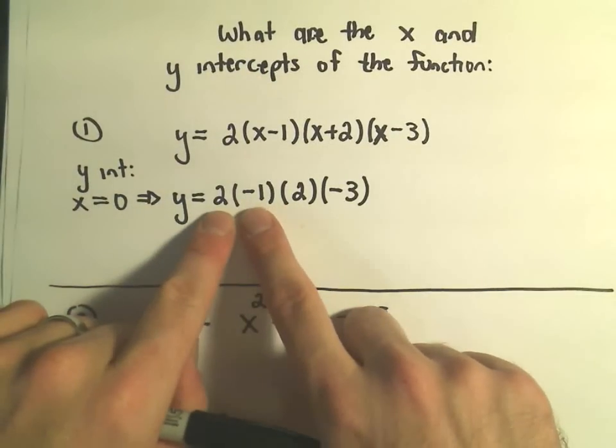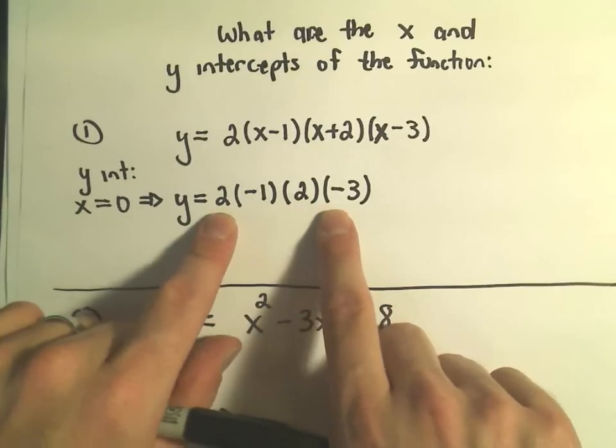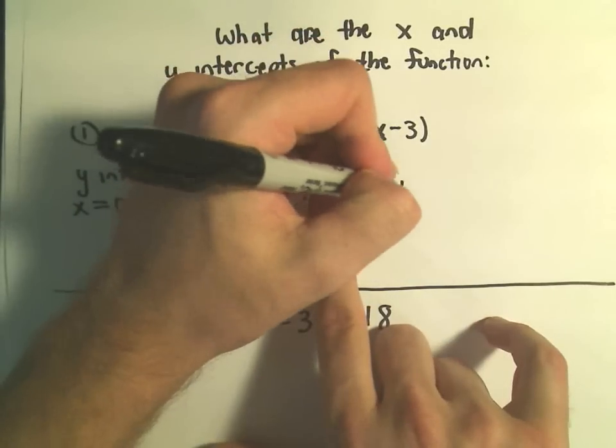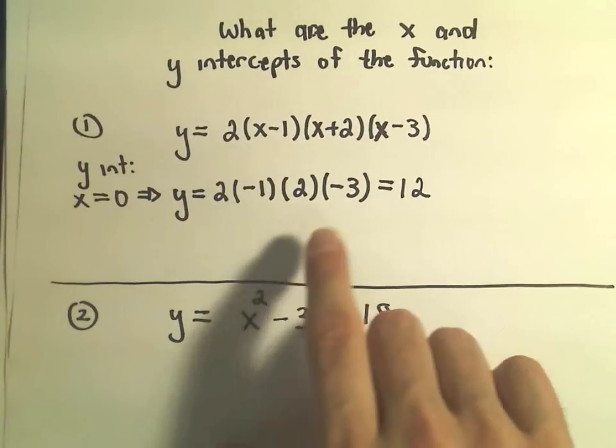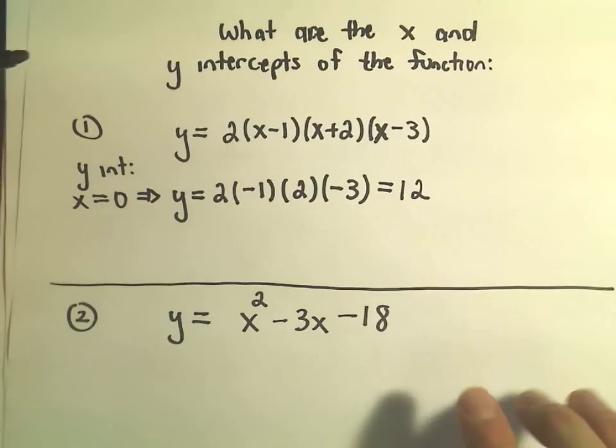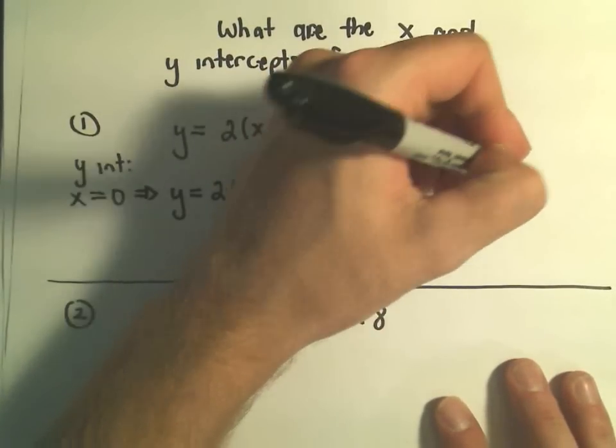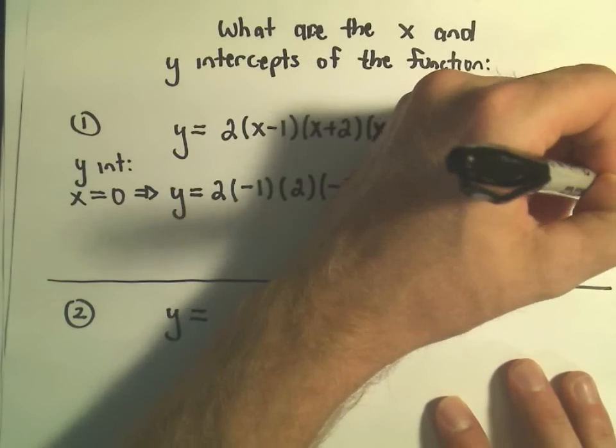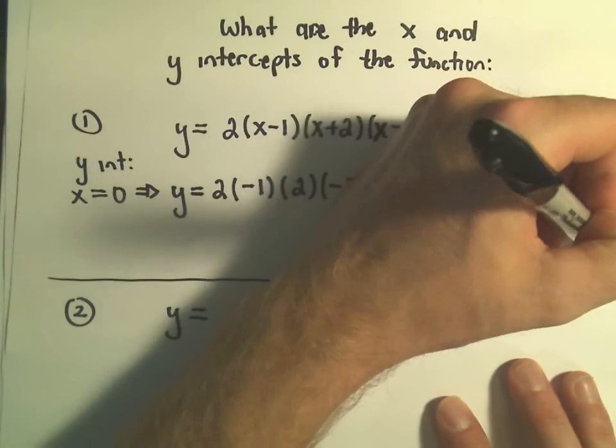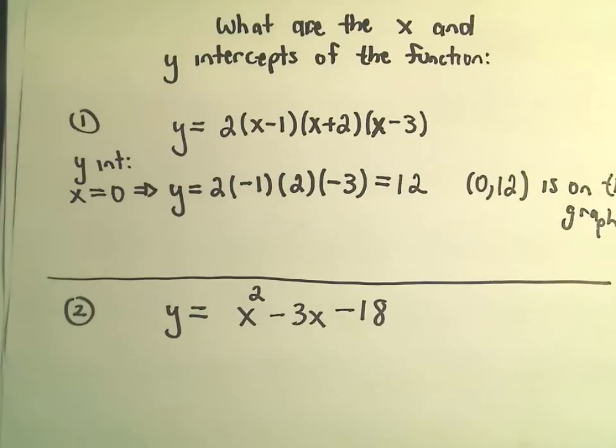2 times negative 1 is negative 2. Negative 2 times 2 is negative 4. Negative 4 times negative 3 is positive 12. So the y-intercept is at positive 12, and the point (0, 12) is on the graph.